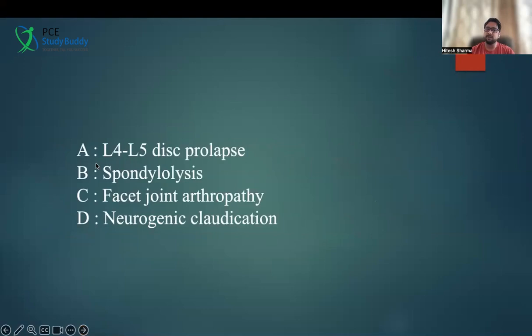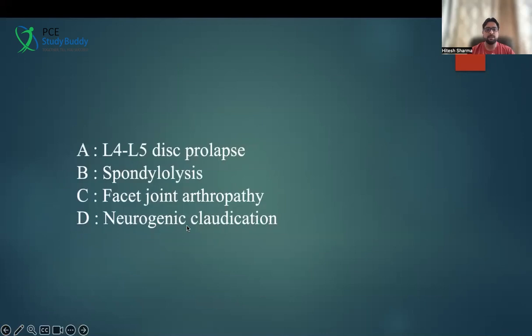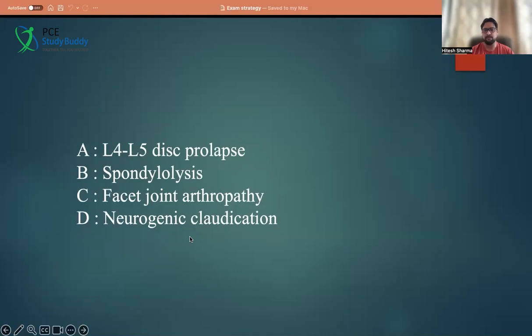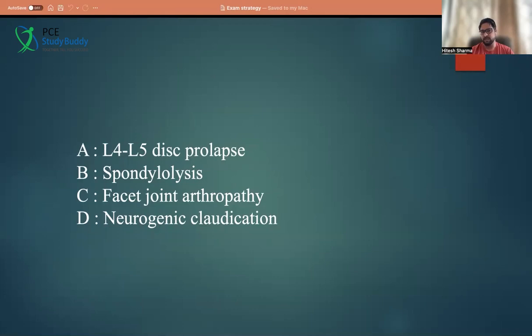When we go to the options: option A is L4-L5 disc prolapse, option B is spondylolysis, option C is facet joint arthropathy, and option D is neurogenic claudication. There is no information in the question relating to neurogenic claudication, so we can eliminate that first. Facet joint arthropathy is ruled out because extension and rotation was not positive. Disc prolapse is ruled out because both bending and extension are causing pain. So just by reading the question and understanding the important words, we eliminated three options and the answer is spondylolysis.